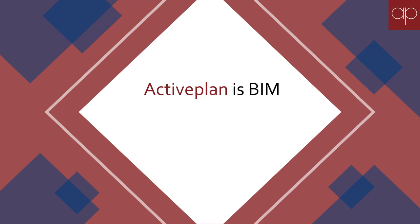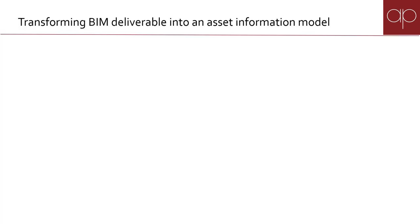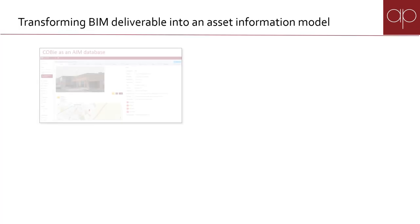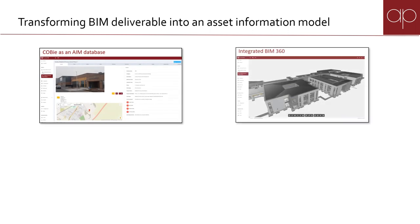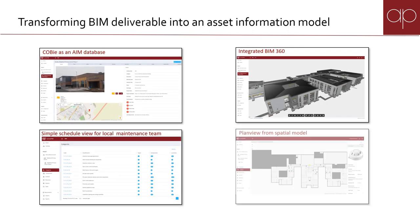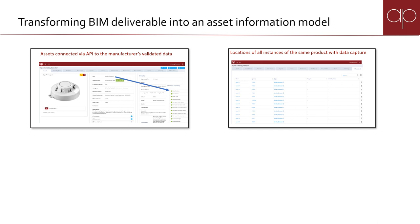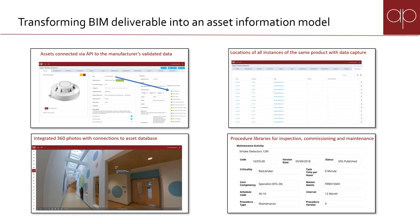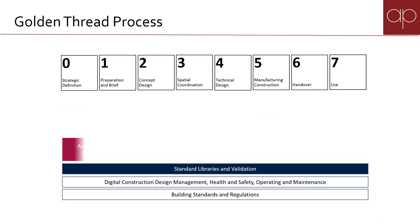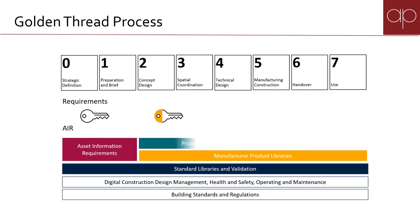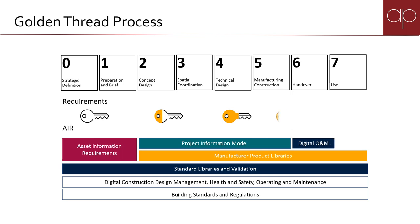ActivePlan is BIM, but it's different. New build or existing estates, 3D or 2D, ActivePlan is BIM Level 2 and ISO 19650 compliant. It's a really practical way of delivering the elusive golden thread, or a single version of the truth.